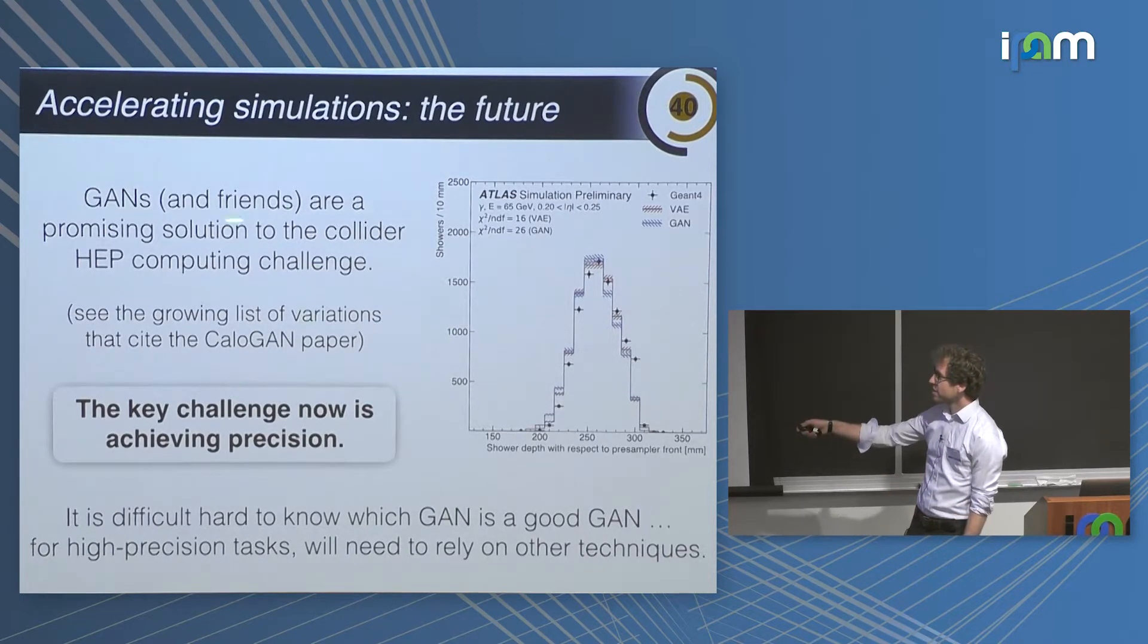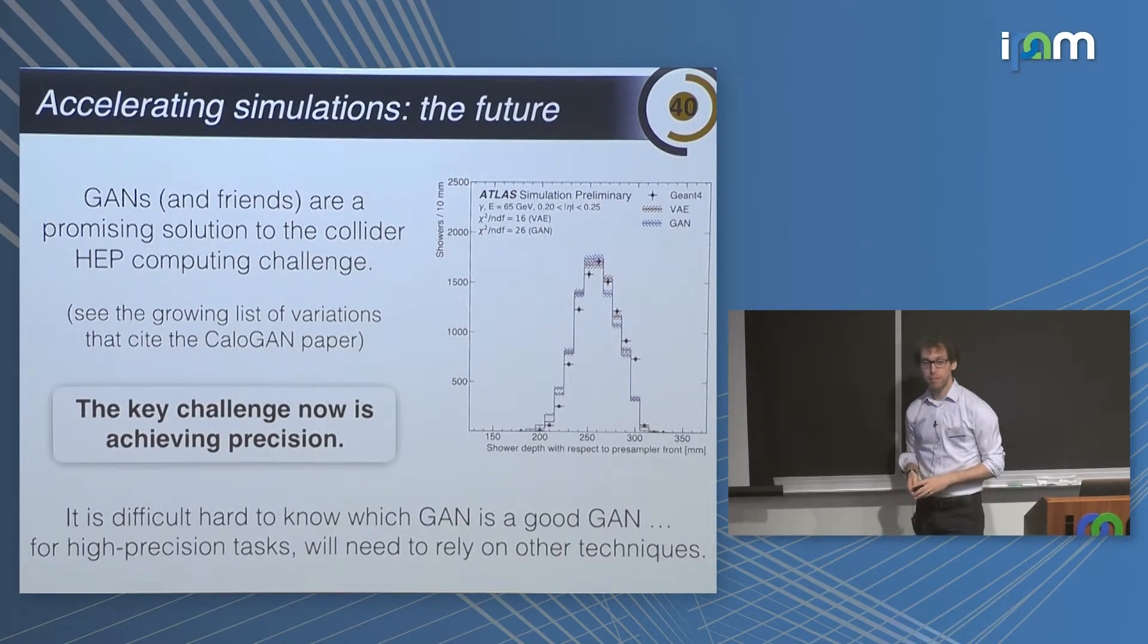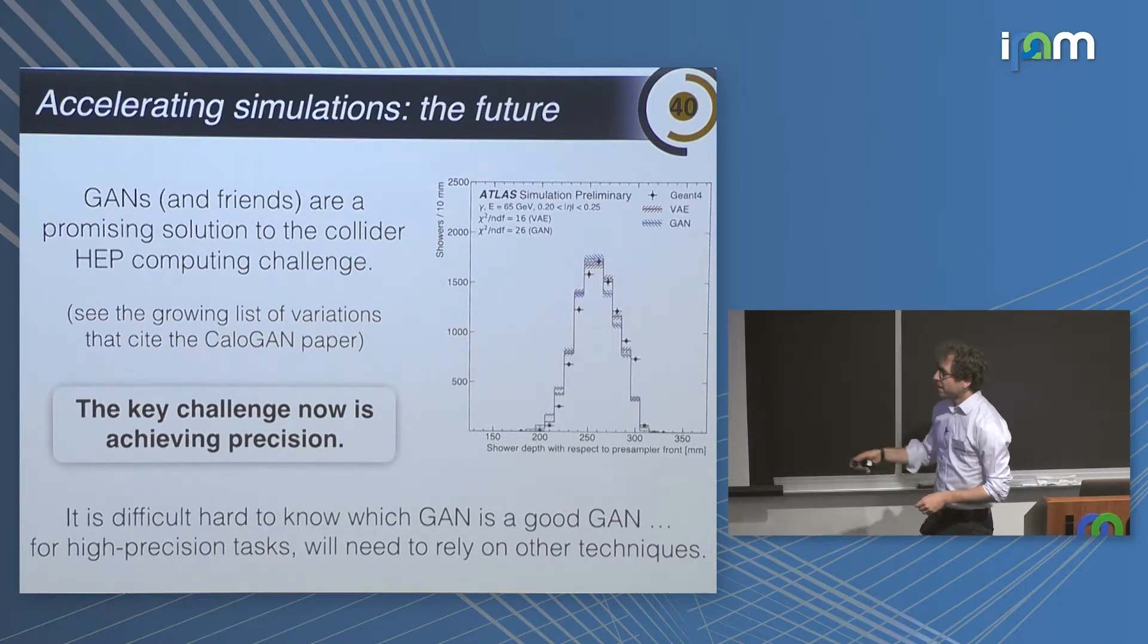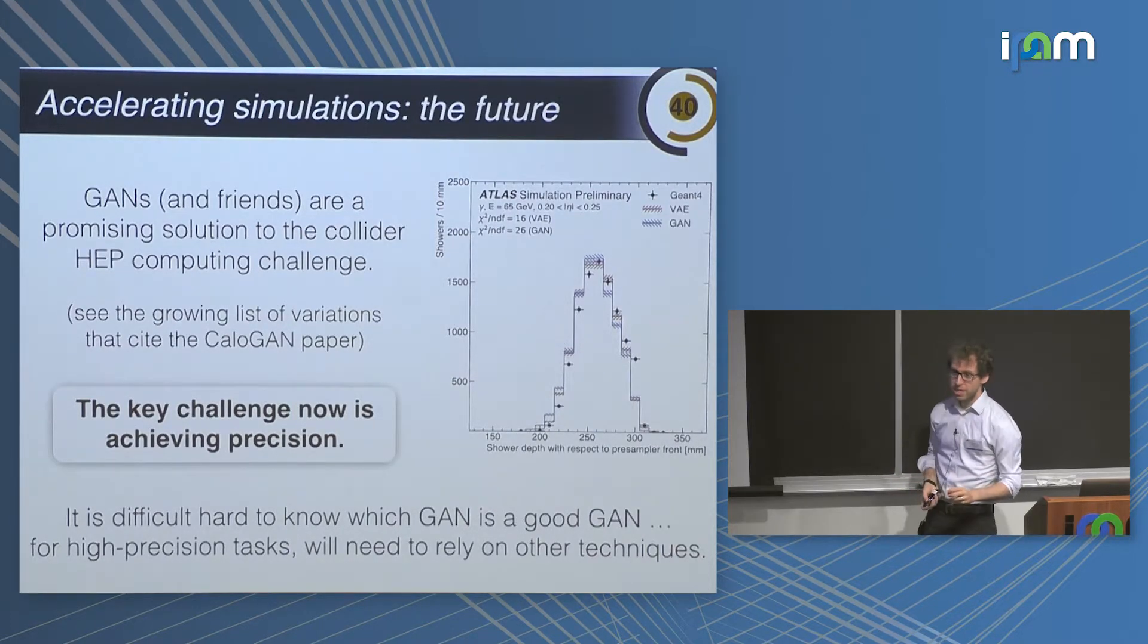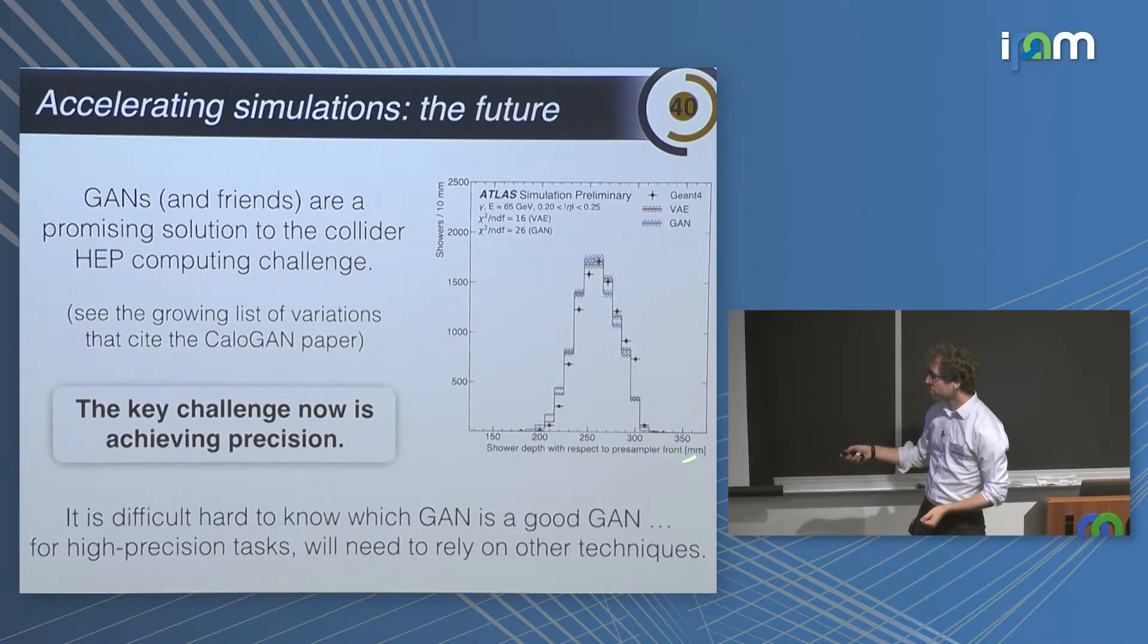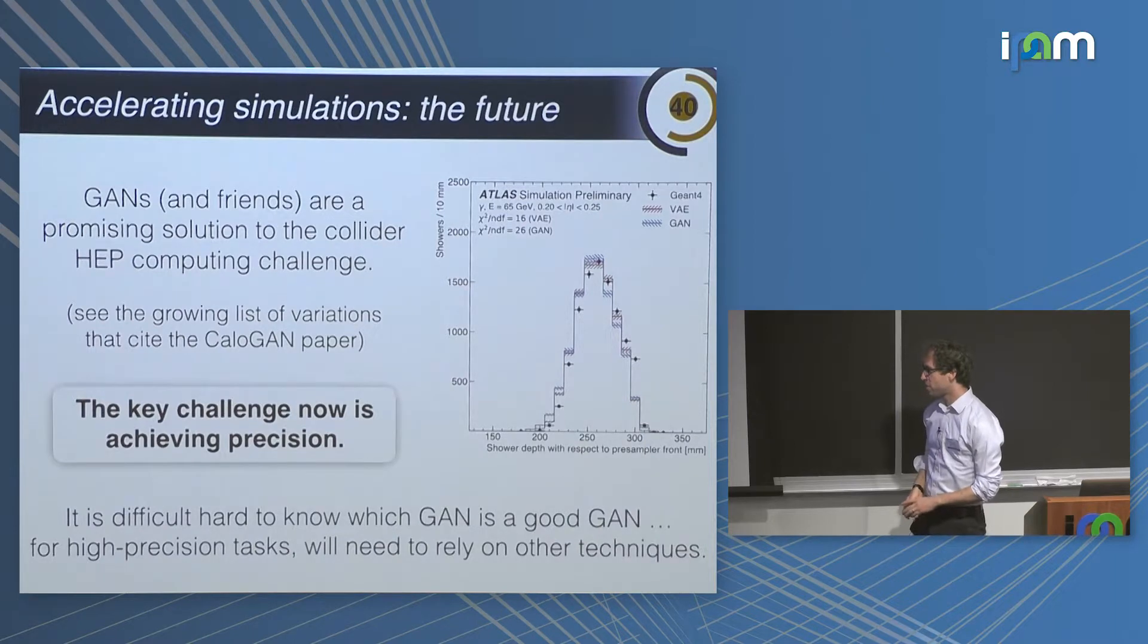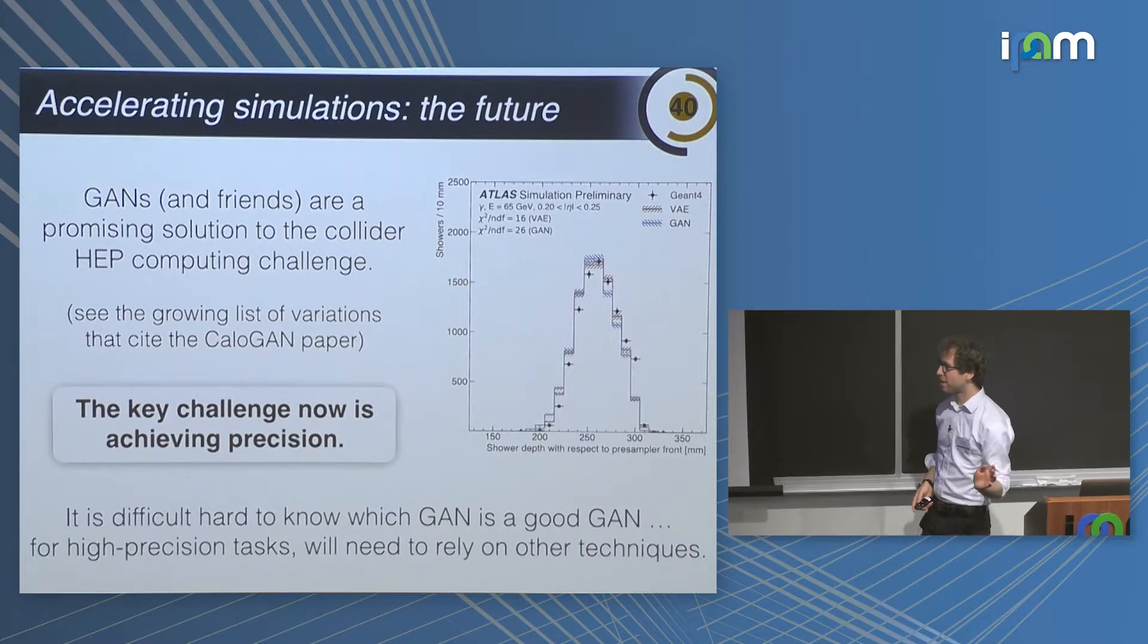And so I think GANs and friends are really a promising solution to the mounting collider HEP computing problem. There's a growing list of variations of techniques which you can find by looking for the references that cite the CaloGAN paper. The key challenge I would say now is not just the technical implementation, but now achieving precision. I'm not going to say any more about CaloGAN. But that's one of the difficulties, like I said, knowing when a GAN is a good GAN. So for high precision tasks, we'll need some other techniques.